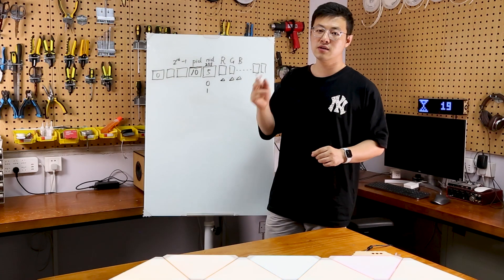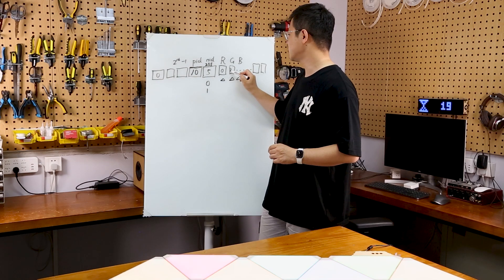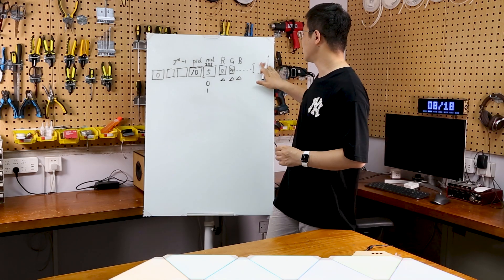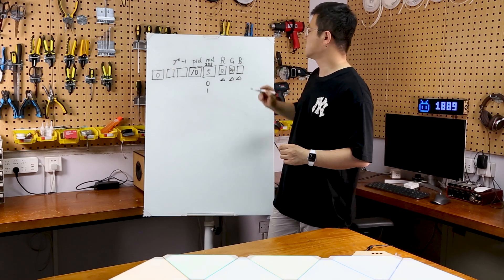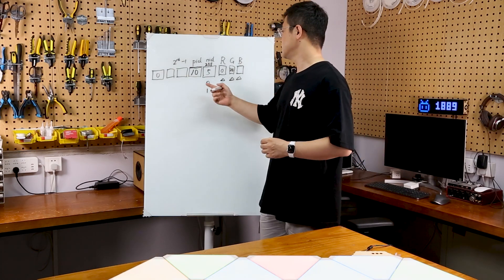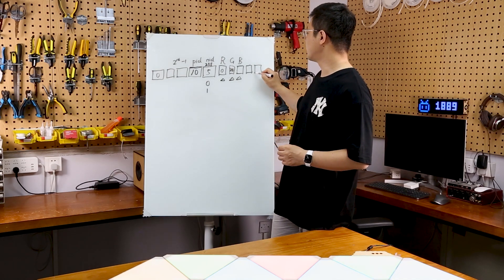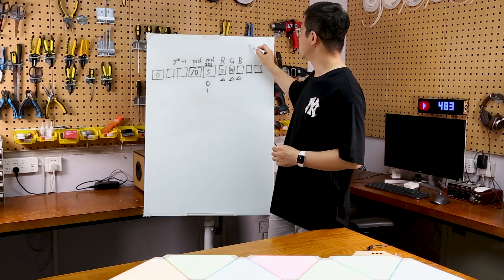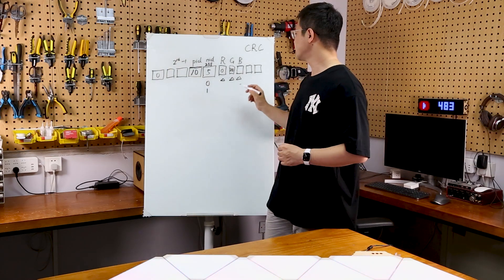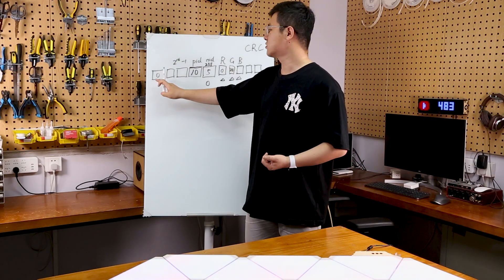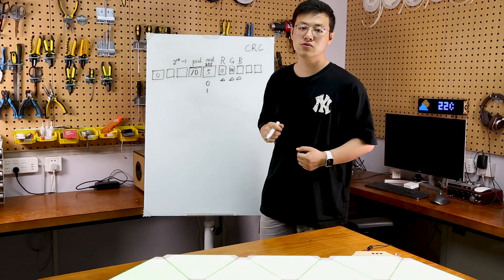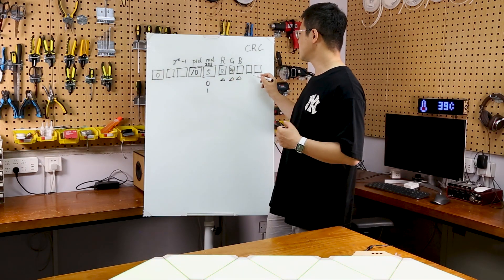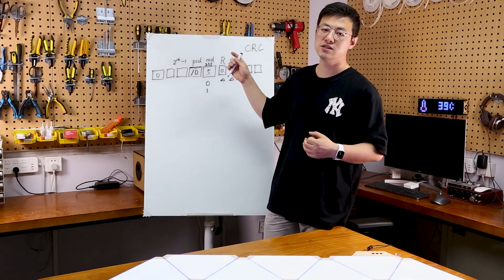当然我们规定好了，去执行这个消息。颜色，比如我们要盯着绿色，那这一位就要写零，这一位写255，这一位再写零。有效载荷就是这十个字节的数据。